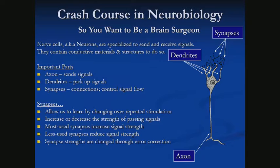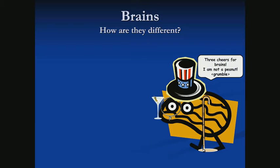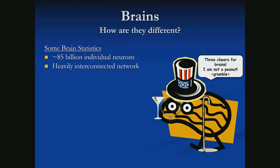That's the rough model we're going to use for our artificial neural networks. Our brains have around 85 billion individual neurons, and it's a very heavily interconnected network. Each of those neurons has about 7,000 synapses.